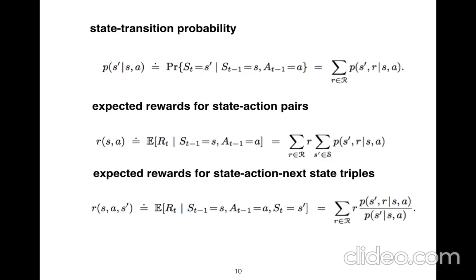So state transition probability and expected rewards for state action pairs and expected rewards for state action next state are just some rewards in each state you are in.